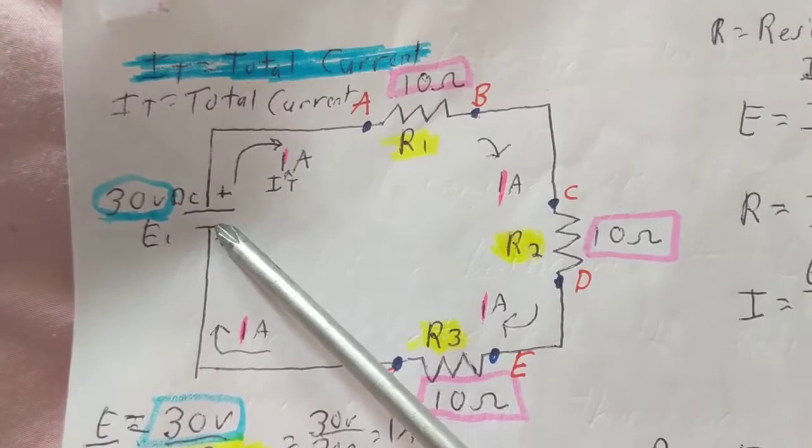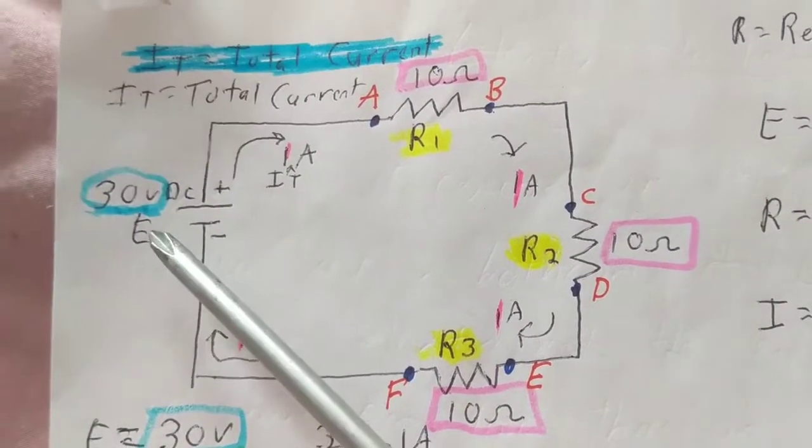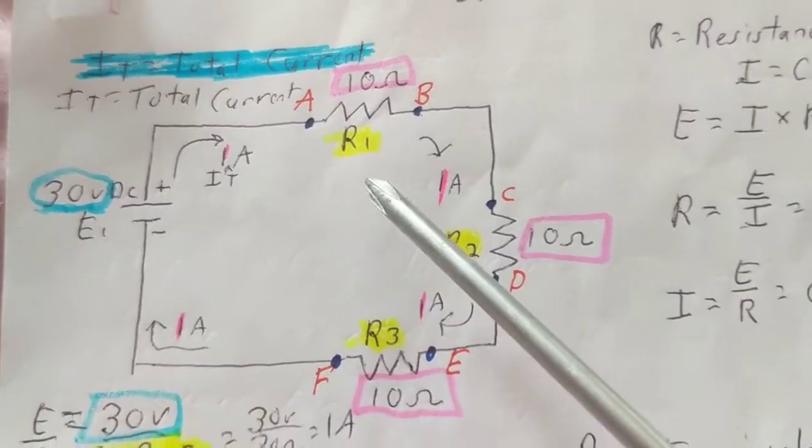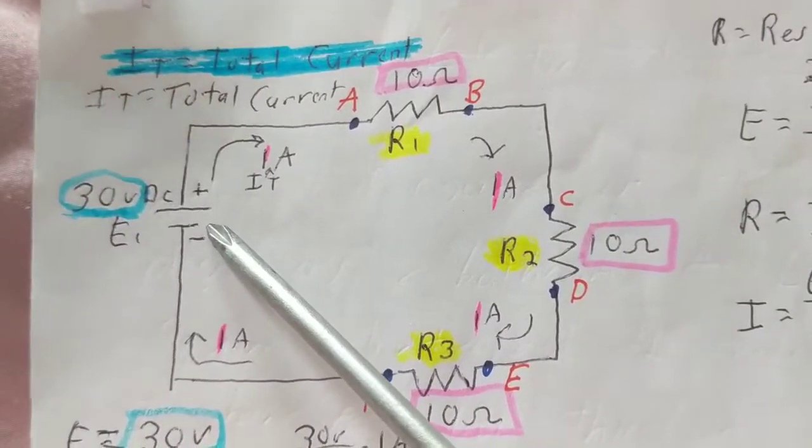We have a battery source, positive and negative, E1 30 volts DC. A battery is DC. Now it could be a power supply, it could be a battery, it does not matter as long as it's a source giving us a voltage.